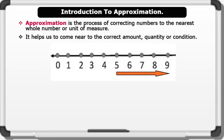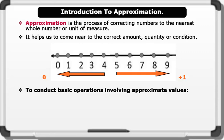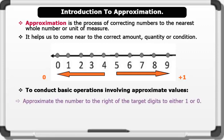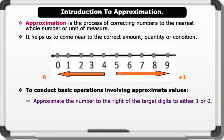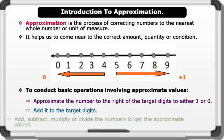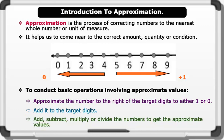...five, six, seven, eight, or nine, round the number up by one and add to the approximate value. But if the target digit is followed by four, three, two, one, or zero, round the number down to zero and leave the approximate value the same. To conduct basic operations involving approximate values, we approximate the number to the right of the target digit to either one or zero, add it to the target digit, then add, subtract, multiply, or divide to get the approximate value.